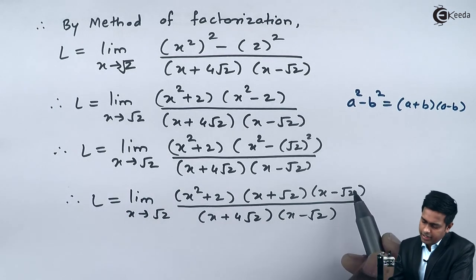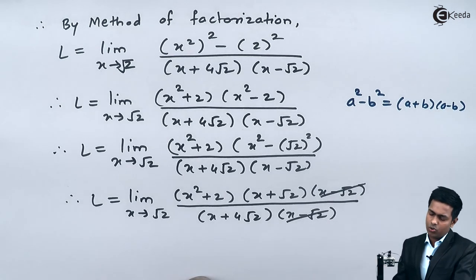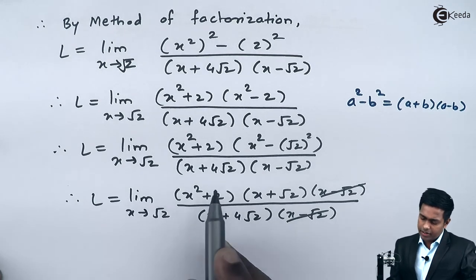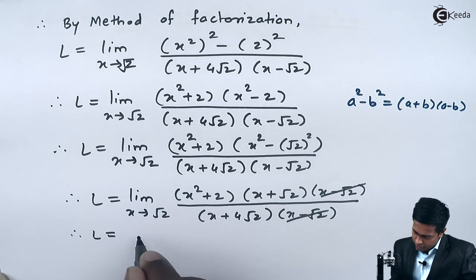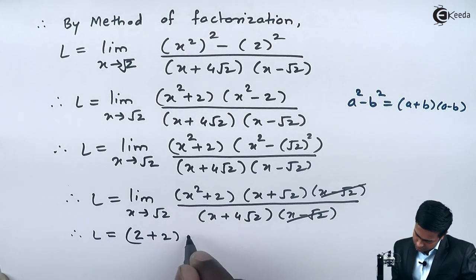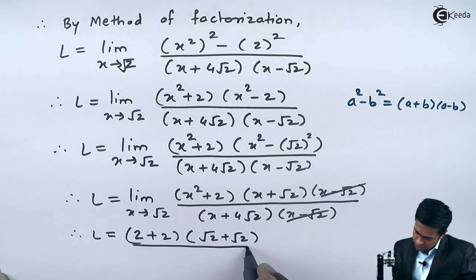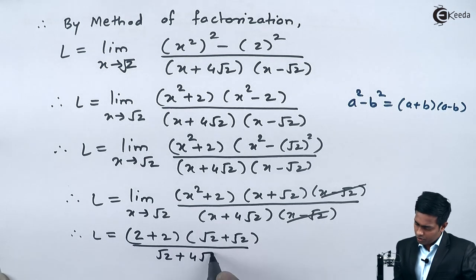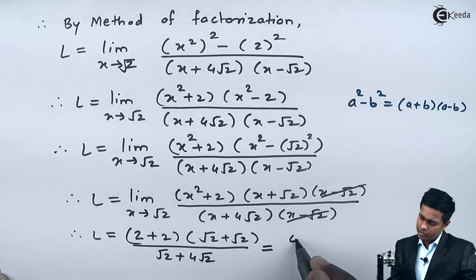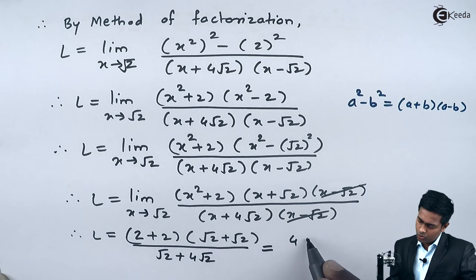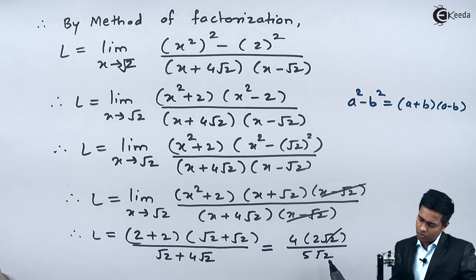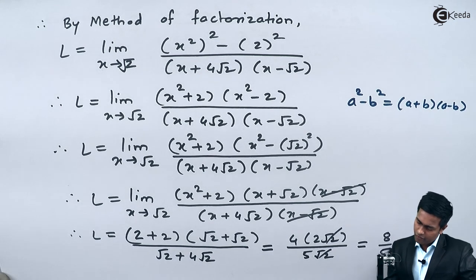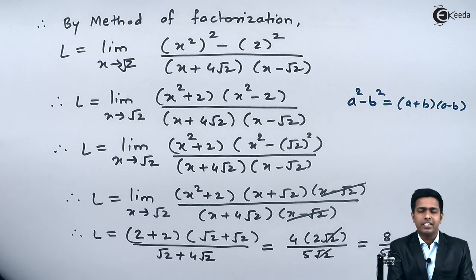Now we can cancel x minus root 2 from numerator and denominator. Applying direct method to the remaining expression: x squared plus 2 becomes root 2 squared plus 2, which is 2 plus 2 equals 4. x plus root 2 becomes root 2 plus root 2, which is 2 root 2. x plus 4 root 2 becomes root 2 plus 4 root 2, which is 5 root 2. Cancelling root 2 from numerator and denominator gives 4 times 2 upon 5, which is 8 upon 5. Hence the value of the given limit is 8 upon 5.